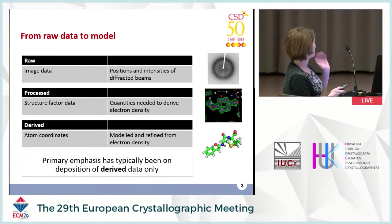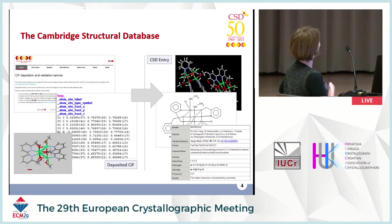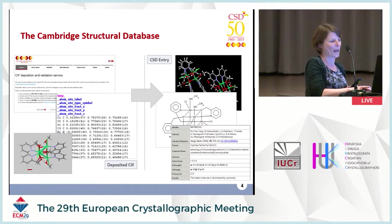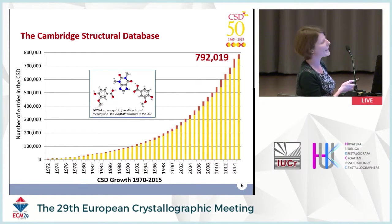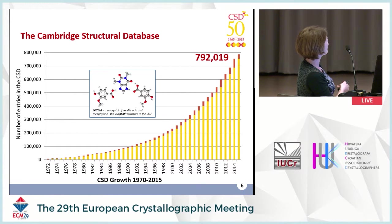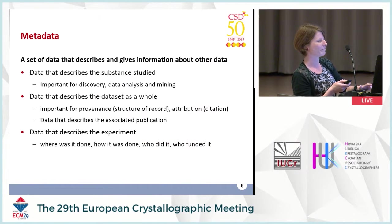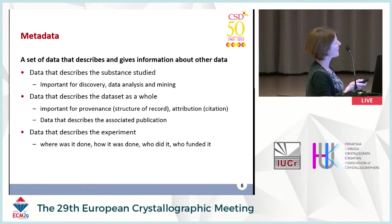Historically at the CCDC our emphasis has been on the deposition of derived data. What we collect or receive from depositors is the electronic CIF file, which contains atomic coordinates. We use those coordinates to create a CSD entry with chemical connectivity, a 2D diagram, and more chemical information such as compound name. Over the 50 years we've been creating the CSD, the number of small molecule crystal structures published has continued to grow — we now have over 790,000 crystal structures. Just as with the PDB, as the number of structures rises, the complexity and size of structures also continues to rise, so we've really had to evolve how we deal with data and metadata at CCDC.